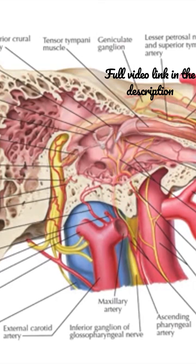The protection of the tympanic cavity is afforded by the auditory tube, which maintains an equilibrium of air pressure on each side of the tympanic membrane, and the shape of the articular surfaces between the ossicles, and the reflex contraction of the tensor tympani muscle and the stapedius muscle, which prevents damage during sudden explosive sounds.